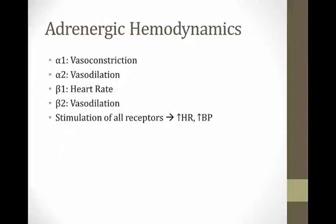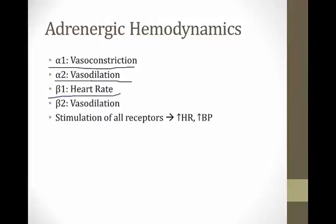Summary of hemodynamic effects: alpha-1 causes vasoconstriction; alpha-2 causes vasodilation via negative feedback; beta-1 increases heart rate; beta-2 causes vasodilation. If you stimulate all receptors simultaneously, you get increased heart rate and increased blood pressure.